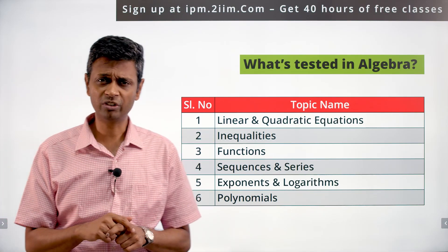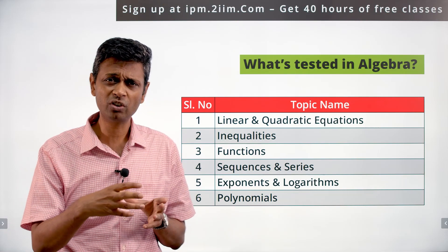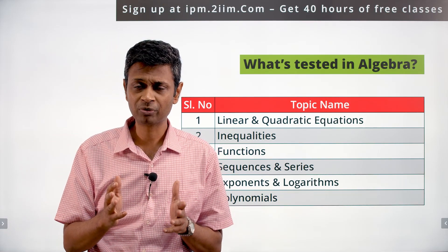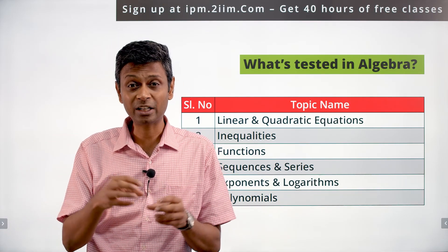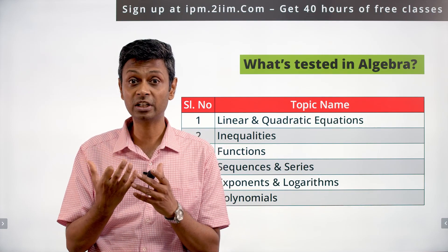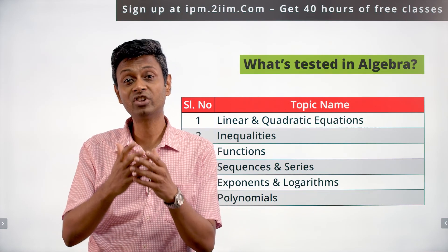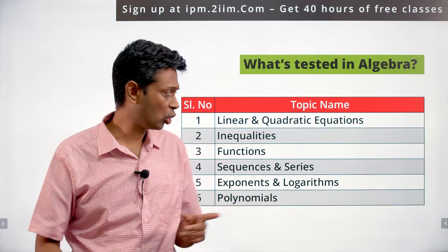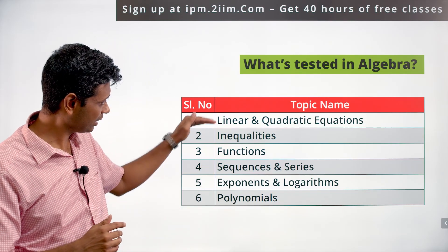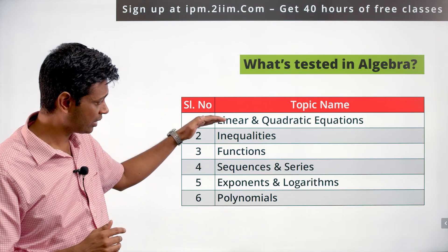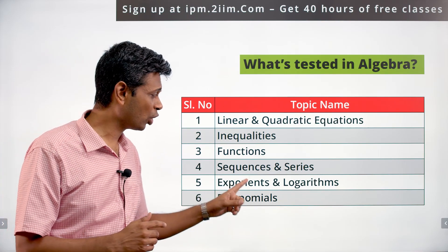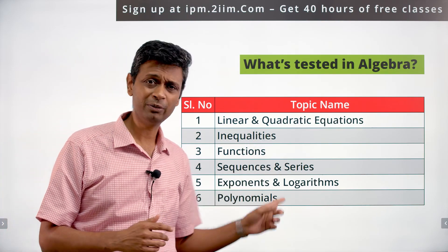Sequences and series is an extrapolation of progressions. For AP and GP, there are two formulae each. Combine those and you get an AGP. Define a sequence differently and you get different sequences and series. Partial fractions also come under this area. So learn linear and quadratic equations, inequalities, functions, and sequences and series.